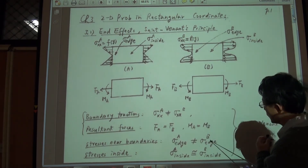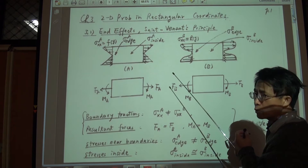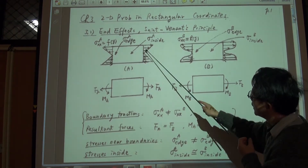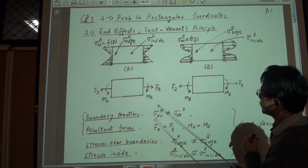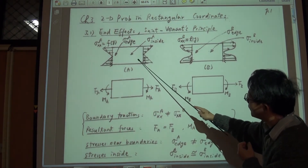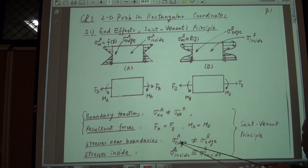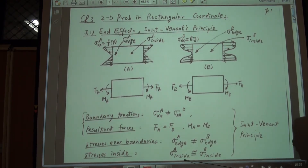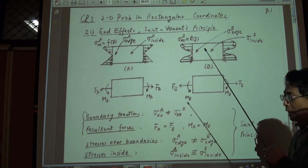So sigma A and sigma B will be approximately equal inside. But at the edge, the stress will not be the same, because the distributions are different. This difference between the two sets of distributed loads makes the stress along the boundaries different. So near the boundary, the stress in plate A and the stress in plate B will not be the same. But inside the plate, the stress in plate A will approximately equal the stress in plate B. This is called the similar principle.